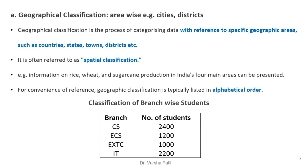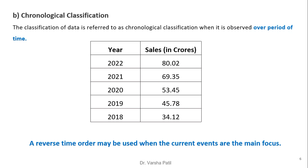Geographical classification is a process of categorizing data with reference to specific geographic areas such as countries, states, towns, districts, etc. It is also referred to as spatial classification. For example, information on rice, wheat, sugar, or can production in India's four main areas can be presented for convenience of reference. Geographic classification is typically listed in alphabetical order. See the example: classification of branch-wise students — four branches are mentioned, arranged in alphabetical order: CS, ECS, EXTC, and IT — with the respective student counts presented.